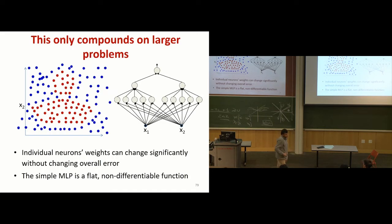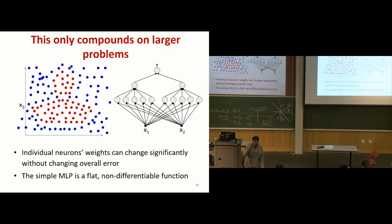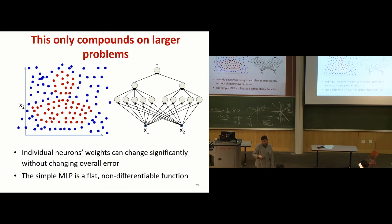The problem is the threshold function has two characteristics. Where it does have a derivative, the derivative is zero — meaning a small change in perceptron parameters results in no change at all in the computed error. And at the point where you cross a training instance, the derivative is infinite. So the function is either not differentiable or the derivative is zero — it's not a good activation function for optimization.